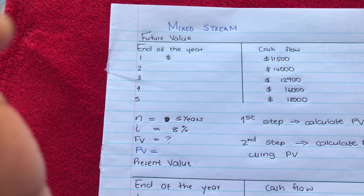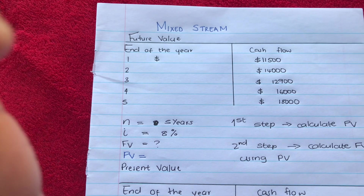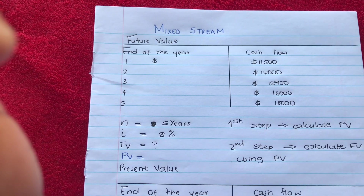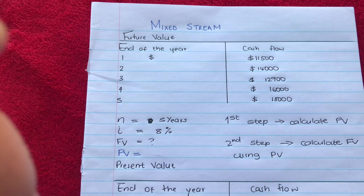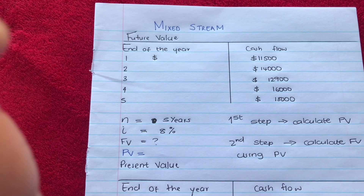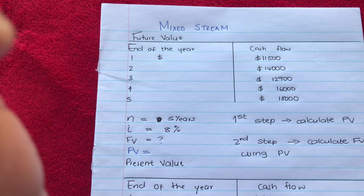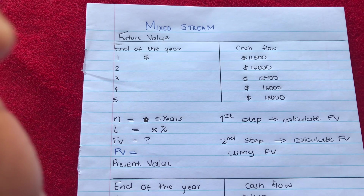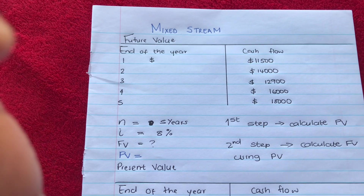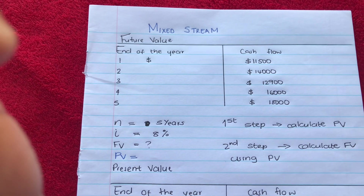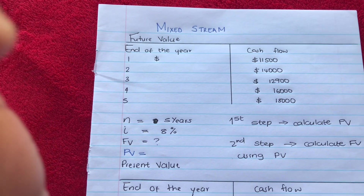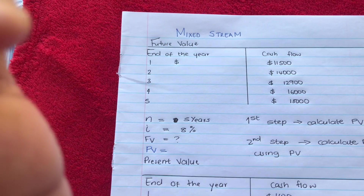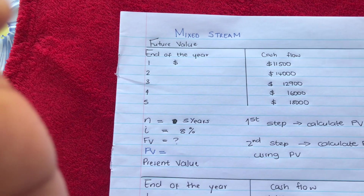On today's video we are dealing with the mixed stream. With the mixed stream we see that each year we deposit a different amount — that's the difference between the annuity and the mixed stream. With the mixed stream we deposit a different amount each year, or each day if we're dealing with daily compounding.